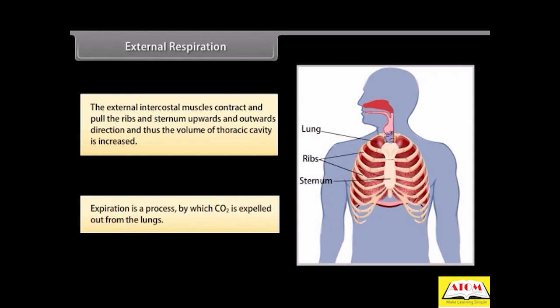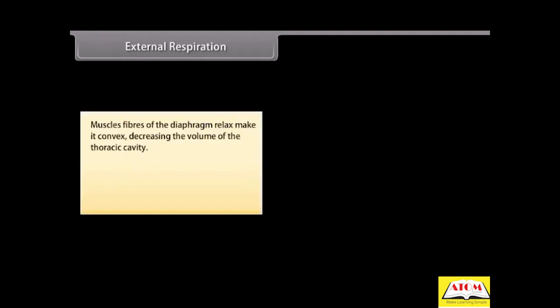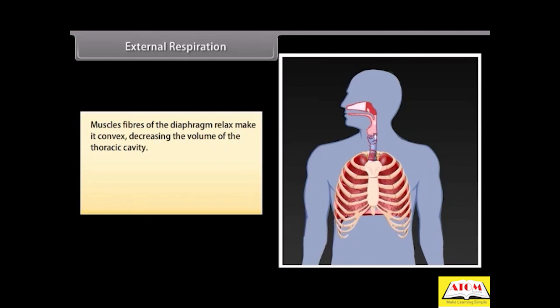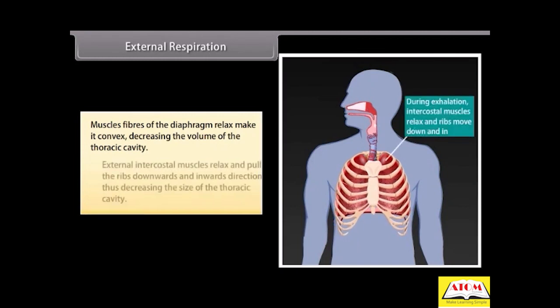Expiration is a process by which CO2 is expelled out from the lungs. Muscle fibers of the diaphragm relax, make it convex, decreasing the volume of the thoracic cavity. External intercostal muscles relax and pull the ribs downwards and inwards, thus decreasing the size of the thoracic cavity.